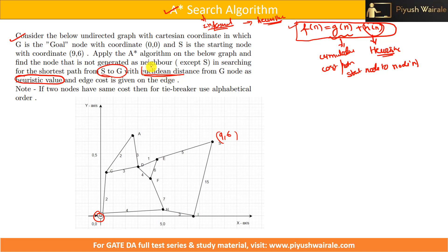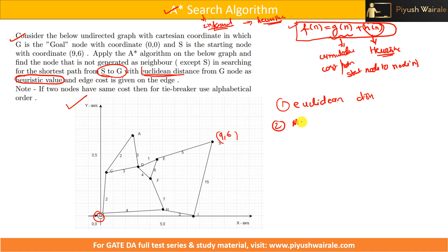When the question is given in graphical format, there are two types of heuristic values they can ask: the first is based on Euclidean distance and the second is based on Manhattan distance.